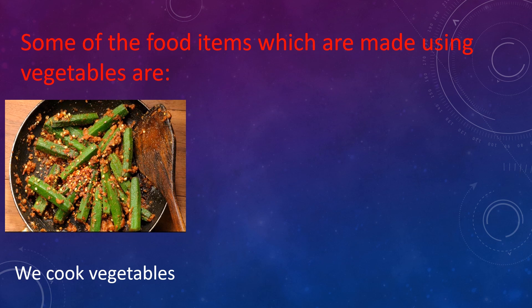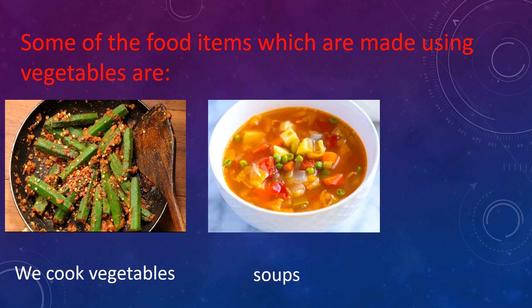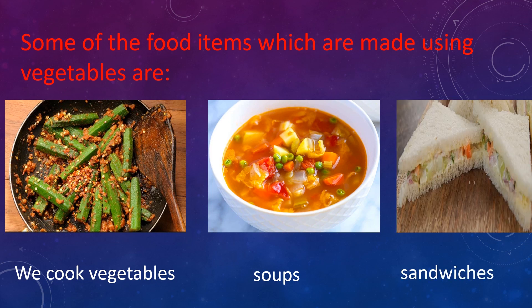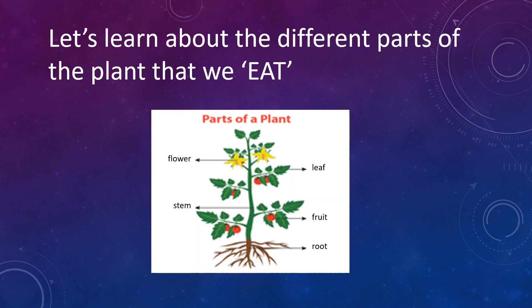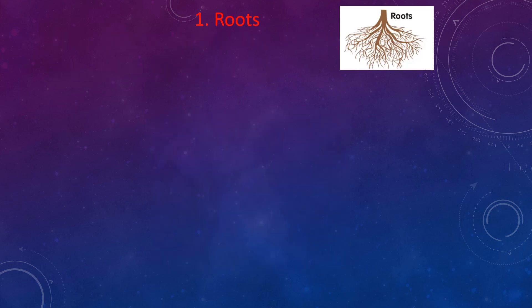We also make healthy vegetable sandwiches. Now let's learn about the different parts of the plant that we eat. Don't be surprised — there are different parts of the plant such as root, fruit, stem, leaf, and flower, and they are edible, which means we can eat them.